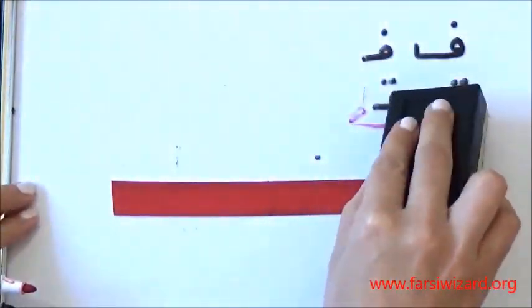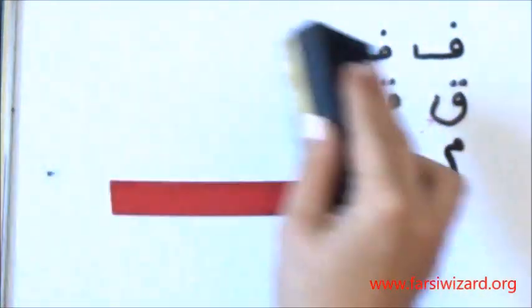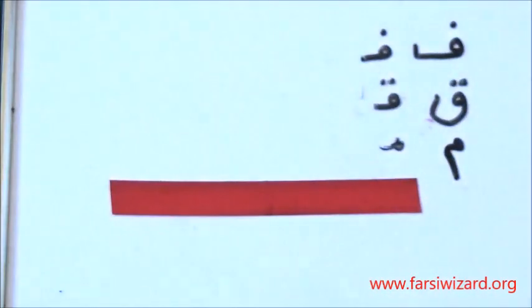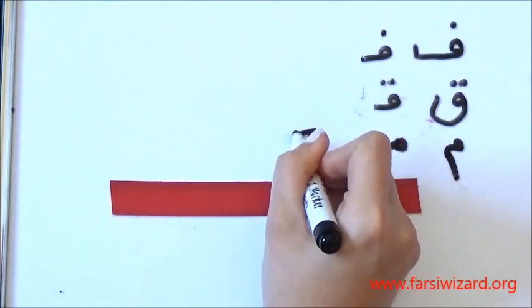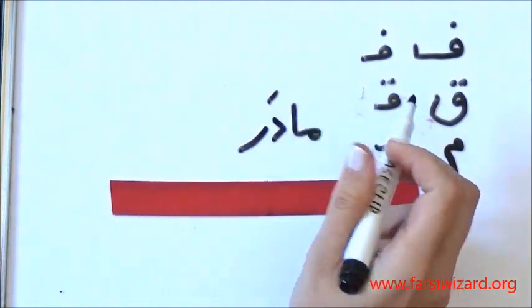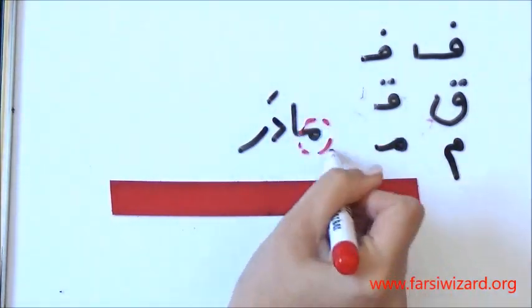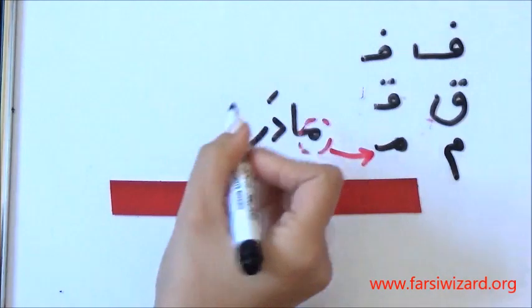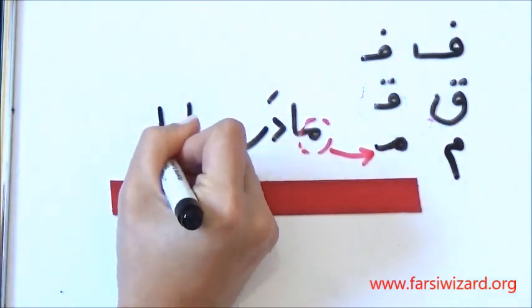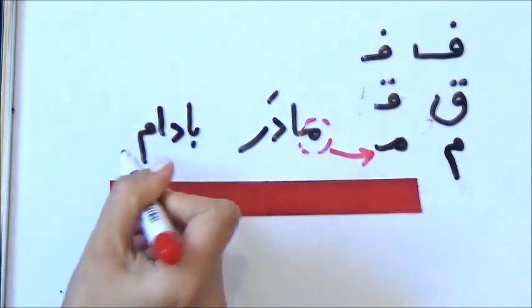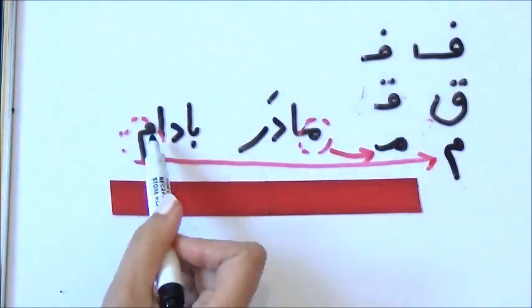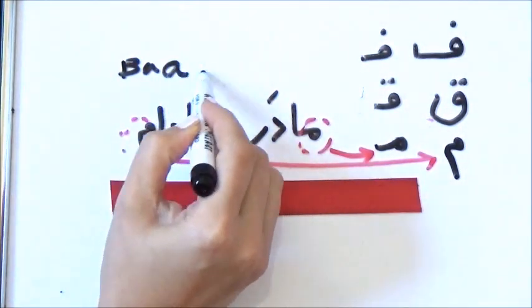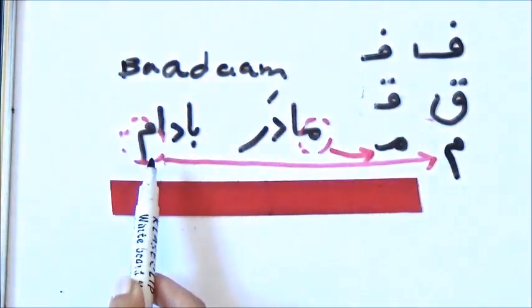The last one, the letter Mim. We already had the example Madar. Mim at the beginning. Therefore, we're using the small version. And the new example is Badam, with Mim at the end, the complete version. Badam, which actually means almond. You know that Iranians love dried fruit. Badam.